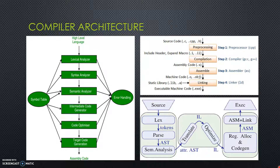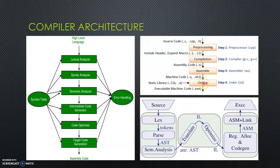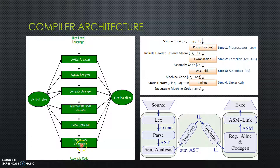Starting with compiler architecture, these diagrams depict how a high-level language is converted to a machine-readable language. This diagram shows how the source code of a high-level language is taken, pre-processed, then compiled, then assembled, then linked with libraries, and finally the output is an executable machine code. Focusing more on the compilation aspects, the phases of a compiler are: lexical analyzer, syntax analyzer, semantic analyzer, intermediate code generator, optimizer, and target code generator.